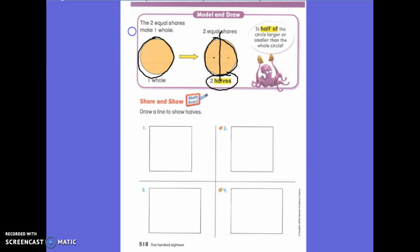If I have two parts, it is called two halves. Because I cut it in two halves. I cut it in half, so it is called half of the circle.